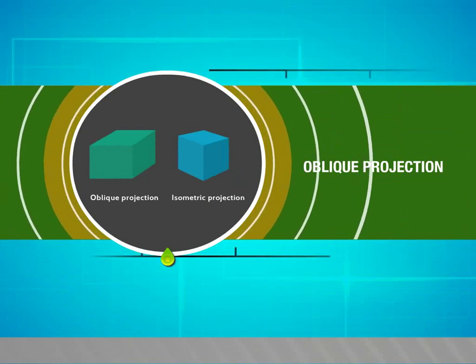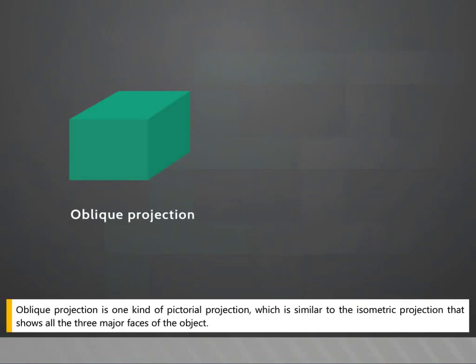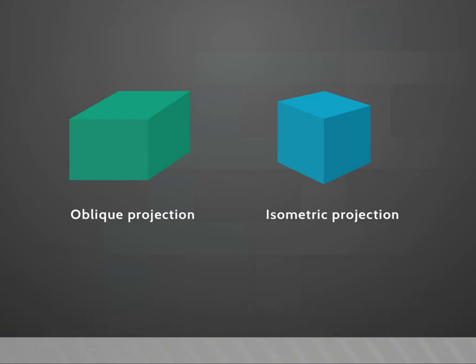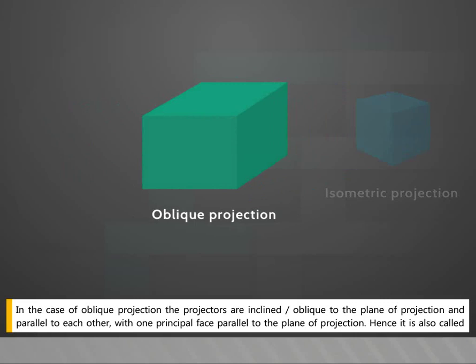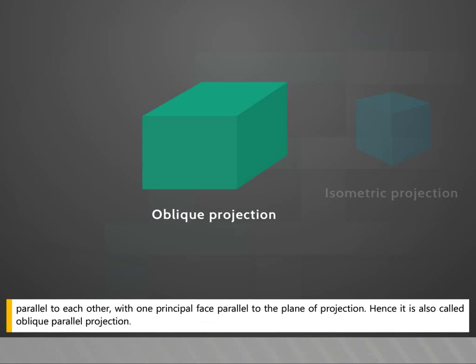In this video we are going to see about oblique projection. Oblique projection is one kind of pictorial projection similar to isometric projection that shows all three major faces of the object. The main difference is that in isometric projection the projectors are perpendicular to the plane of projection and the principal faces are inclined to it, whereas in oblique projection the projectors are inclined to the plane of projection and parallel to each other, and hence it is also called oblique parallel projection.